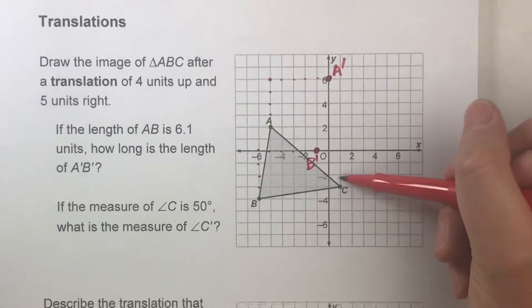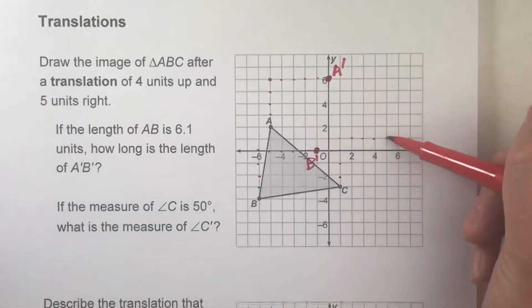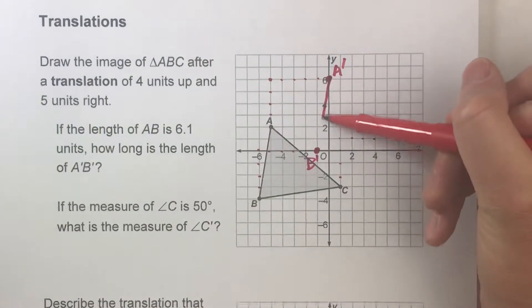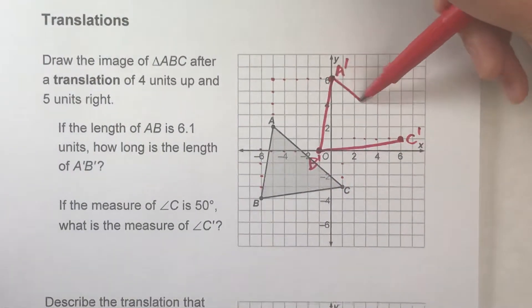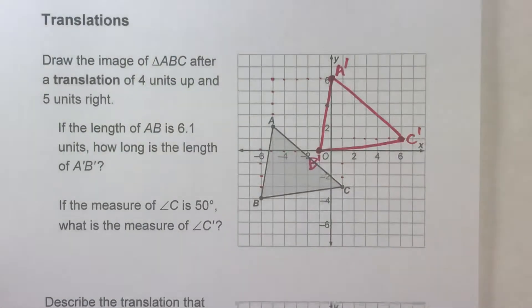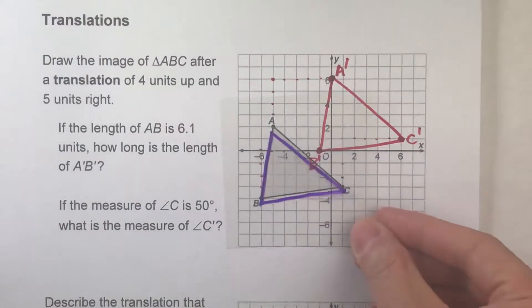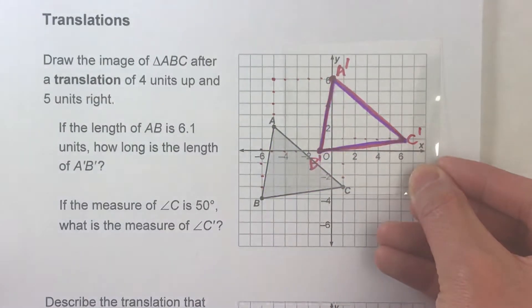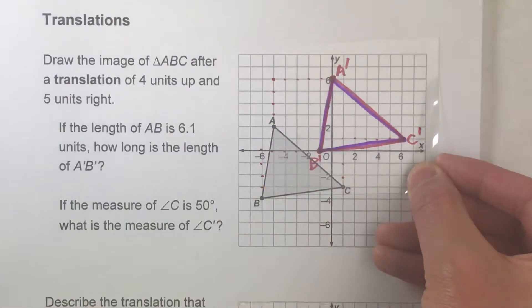And then for C, up four—one, two, three, four—right five—one, two, three, four, five. And when I connect up the vertices, there will be my translated triangle. So you'll notice all it is is the exact same triangle just slid over. And I can use this transparency to show you the triangles will be exactly the same size and the same shape. In other words, they are congruent triangles.